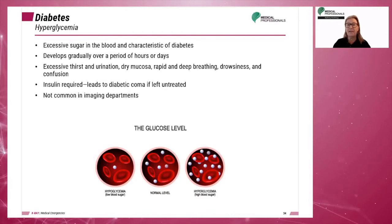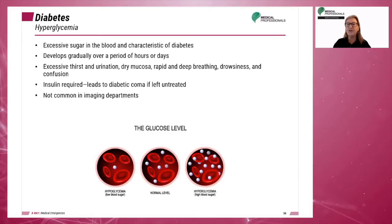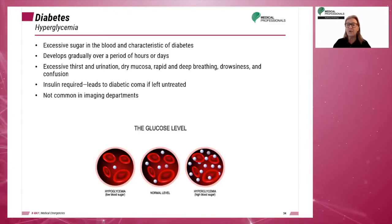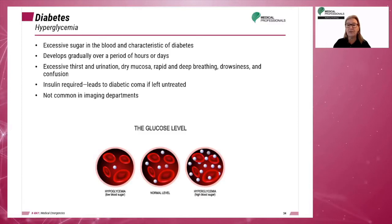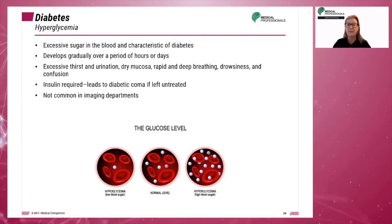In hyperglycemia, there is an excess of sugar in the blood due to lack of insulin. This would develop gradually and could occur if the patient is unaware of his or her diabetic condition. Symptoms can be excessive thirst and urination, dry mucosa, rapid and deep breathing, drowsiness, and confusion. Immediate insulin is required. Untreated, this will lead to a diabetic coma. This condition is less common in imaging departments.